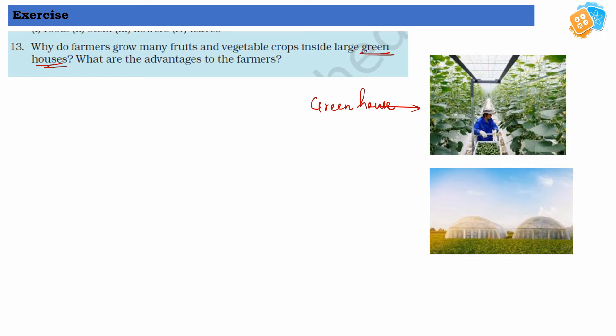The vegetables and fruits require optimum temperature, optimum water and optimum conditions. If farmers keep them in a greenhouse like this, they can manage the heat and temperature.